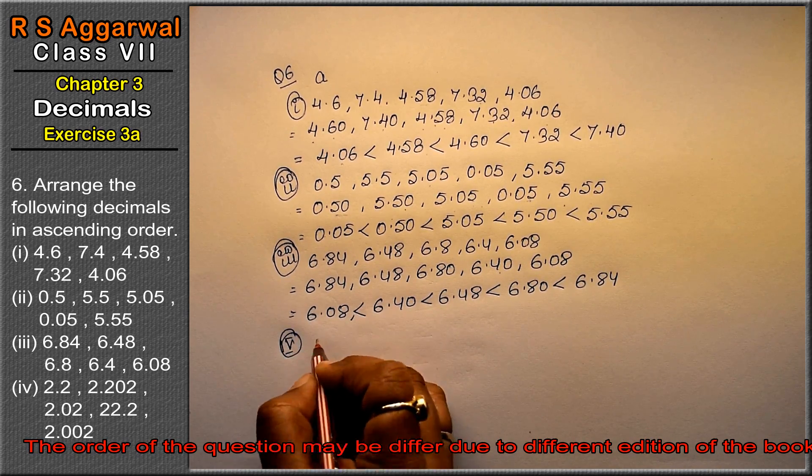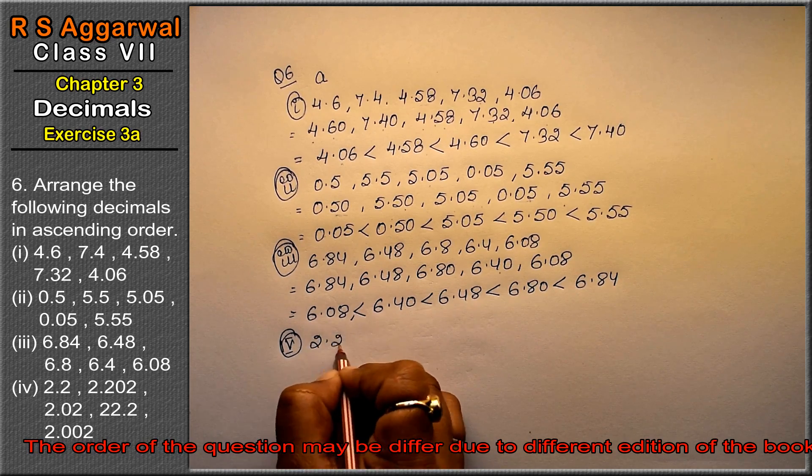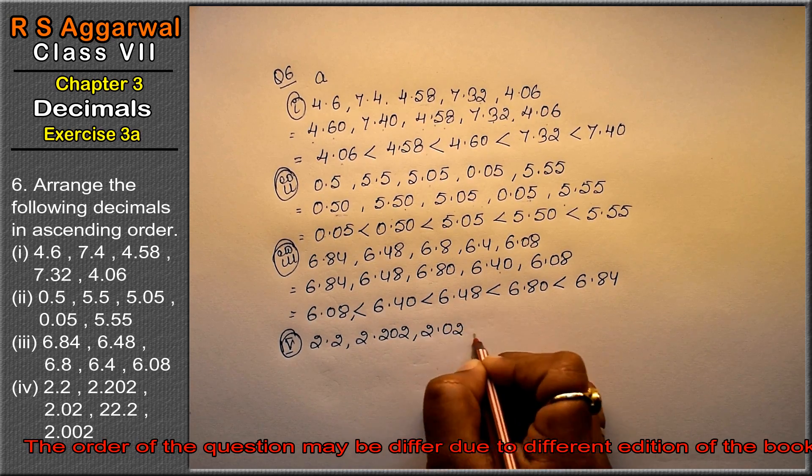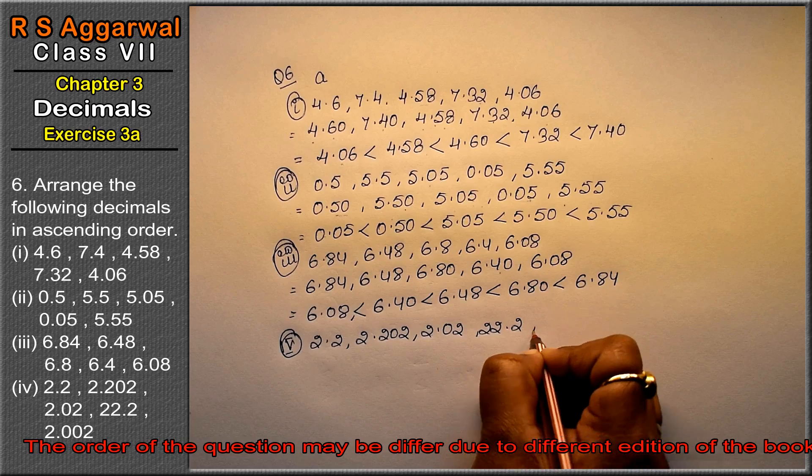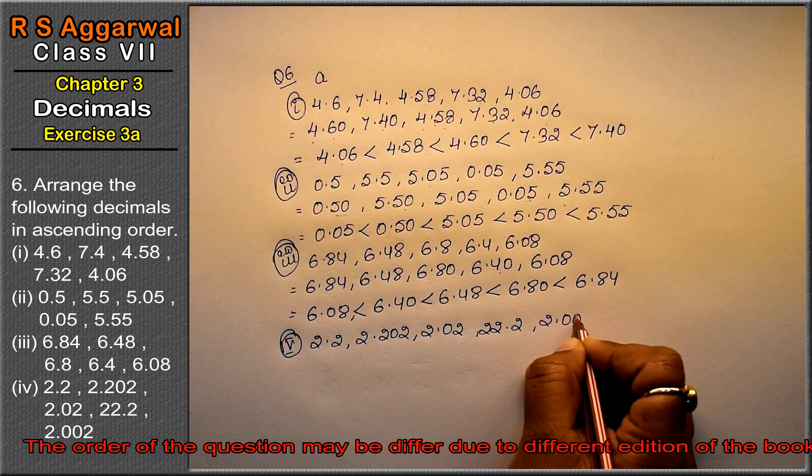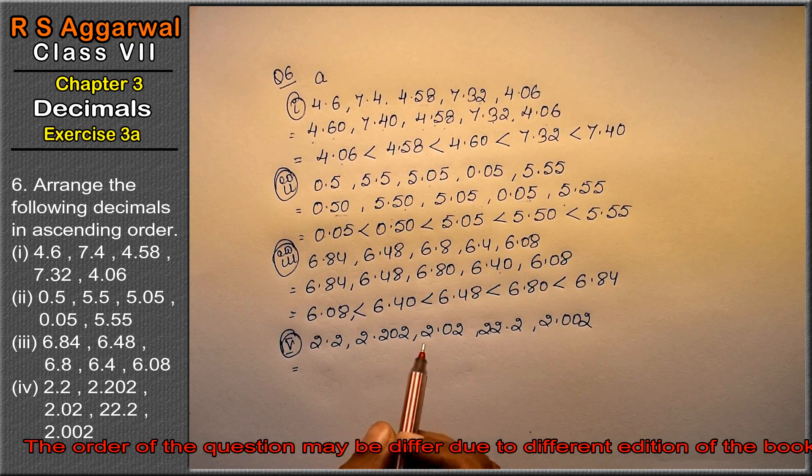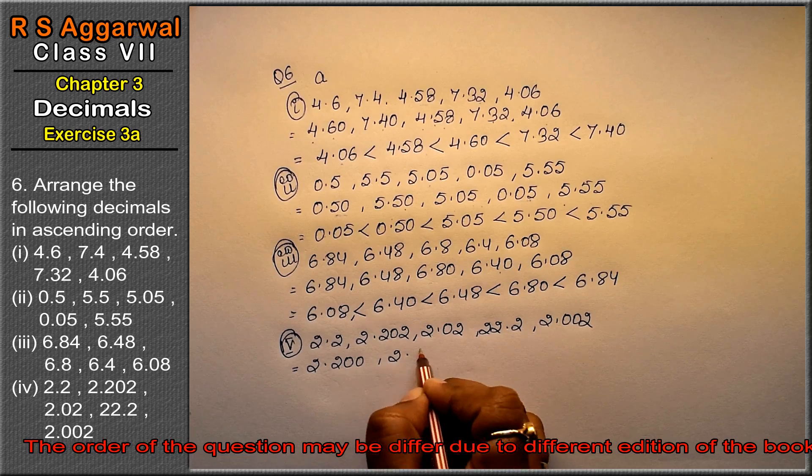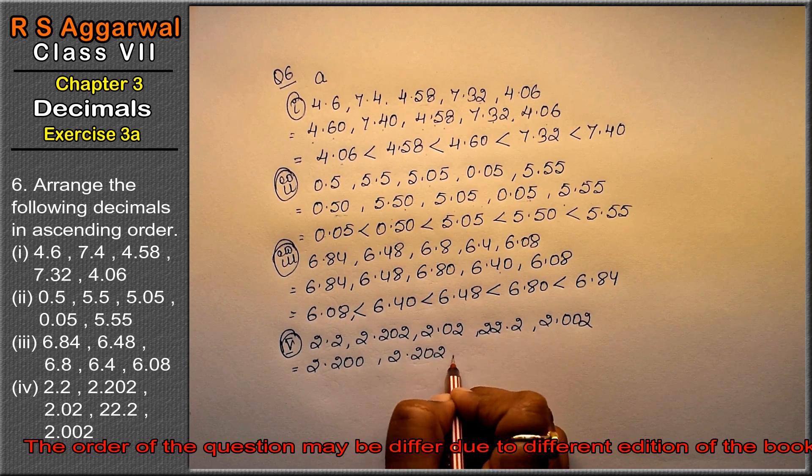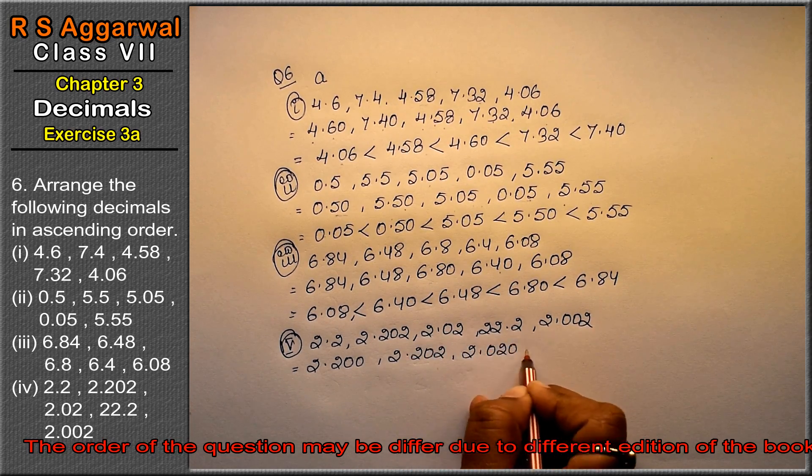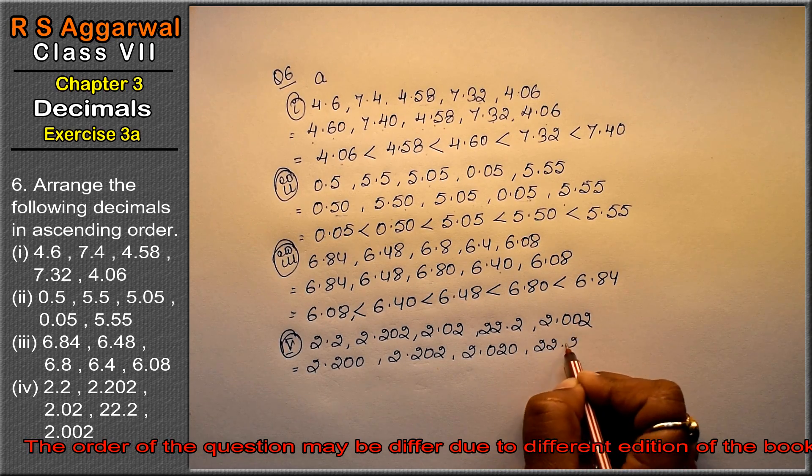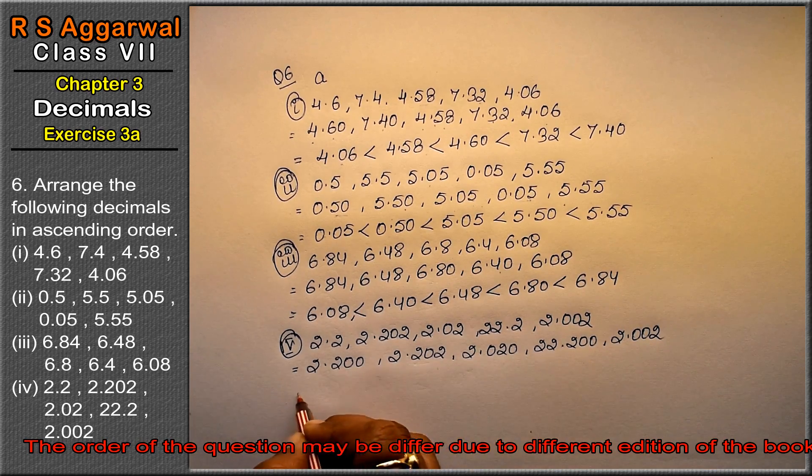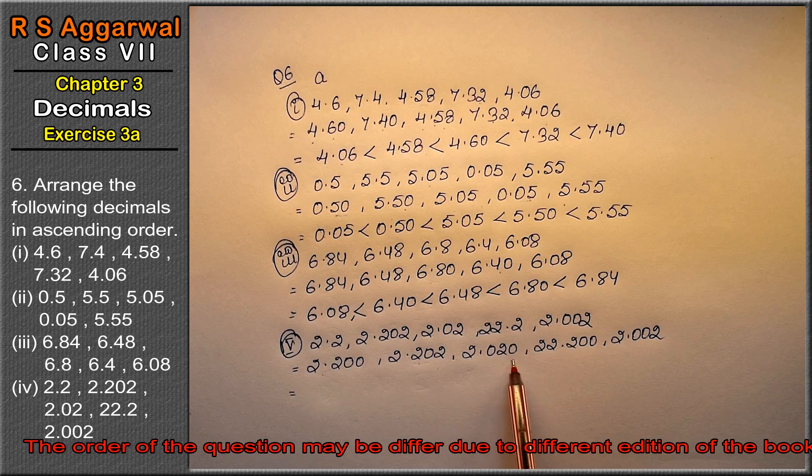Let's do fourth part. Fourth part is 2.2, 2.202, 2.02, 22.2, and 2.002. Let's do like fraction: 2.200, 2.202, 2.020, 22.200, and 2.002.